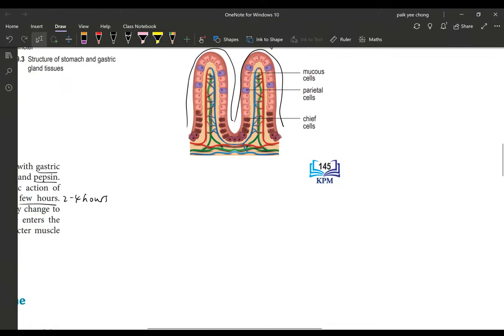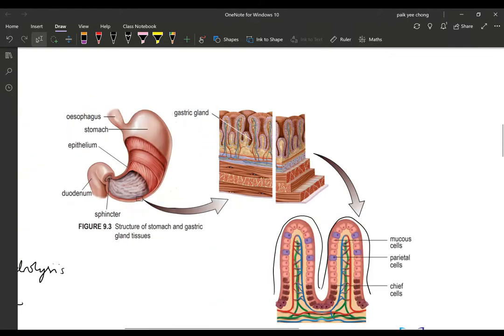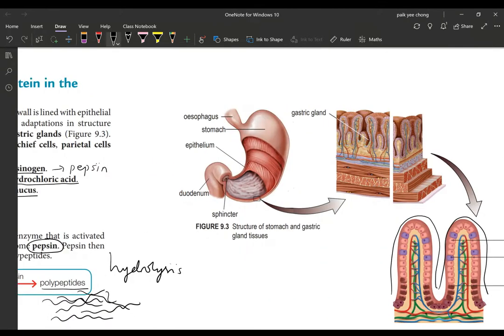When it relaxes, this sphincter is called the pyloric sphincter. The pyloric sphincter will relax and the contents will move into the next stage, which will be the duodenum.